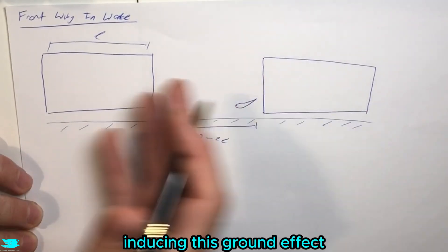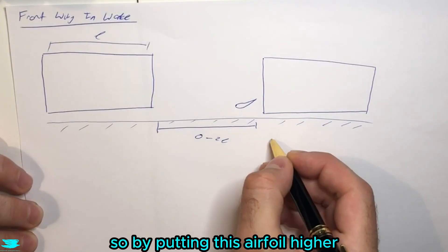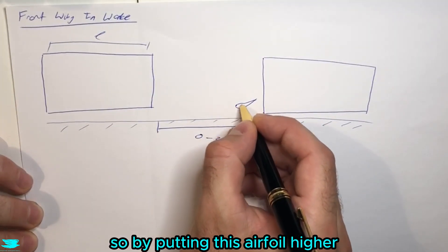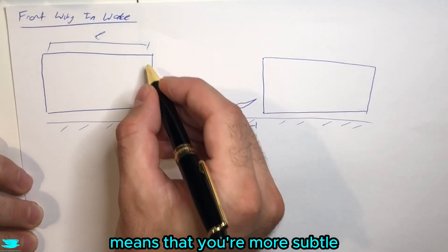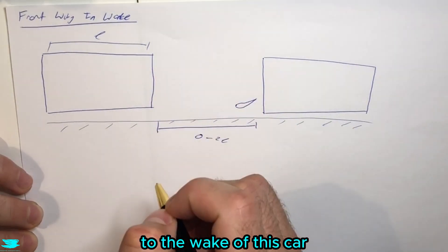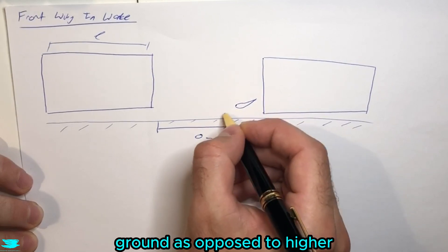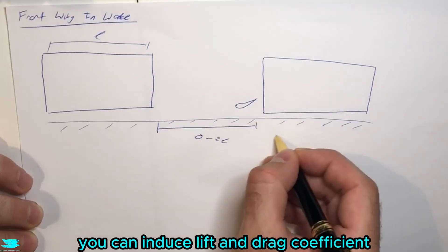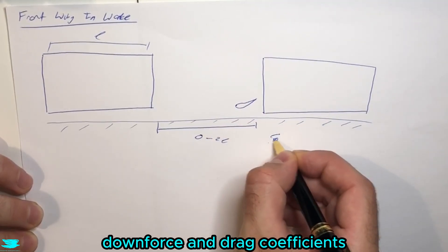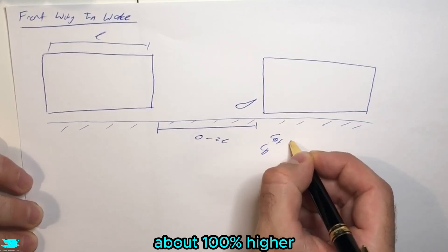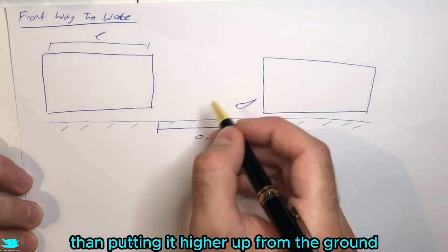Putting this airfoil higher means that you're more susceptible to the wake of this car. Generally speaking, putting this close to the ground as opposed to higher, you can induce downforce and drag coefficients about 100% higher than putting it higher up from the ground.